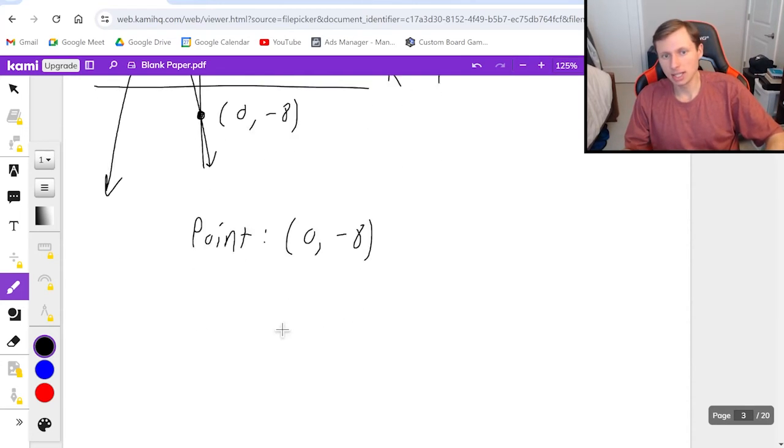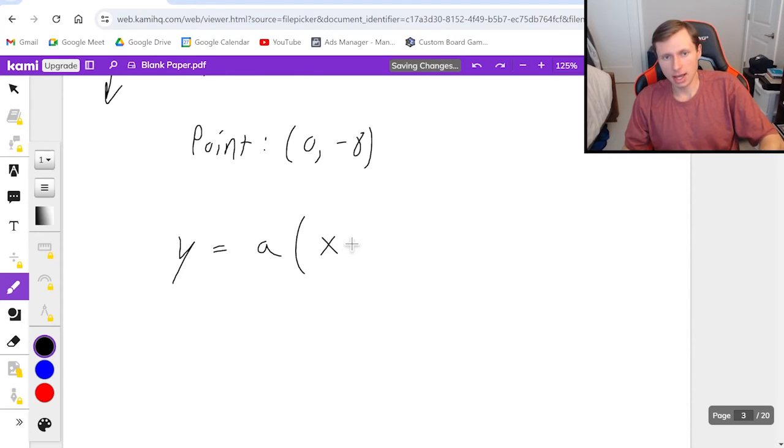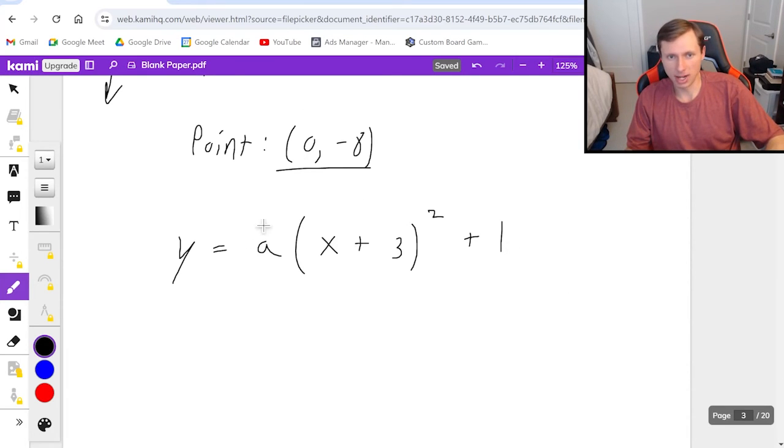So instantly, I know that's going to be y equals a times the quantity x minus negative 3. And since that's a double negative, I will write plus and then squared and then plus 1. Now all I got to do is use this point to solve for a, where x is 0 and y is negative 8.